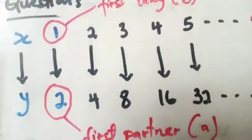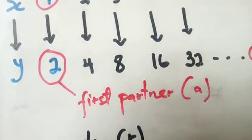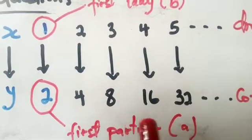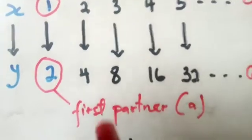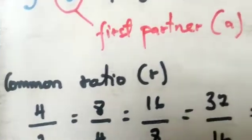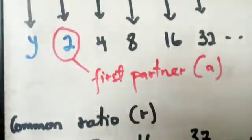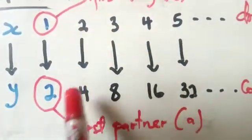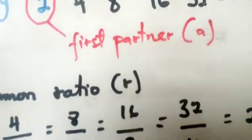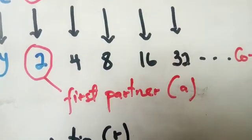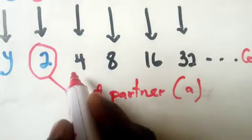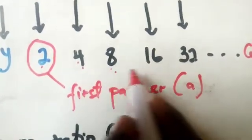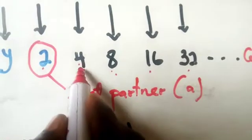Back to the definition: you have to identify certain features in the mapping that confirm it is an exponential mapping. The key feature is the common ratio — specifically the common ratio among the partners (y-values), not among the ladies. A ratio means one value over another, a proportion.